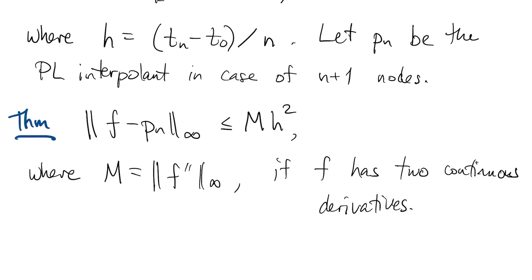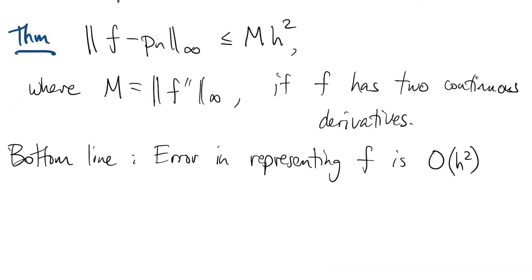In most situations we don't actually know m, we just know that it's there. And what's important is that the error is on the order of h squared as h goes to 0. We call this second-order convergence. So for example, if we cut h in half, we should expect the error to get smaller by a factor of 4.